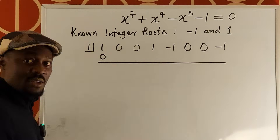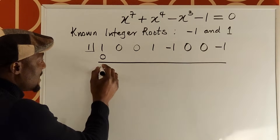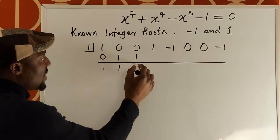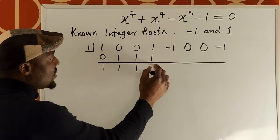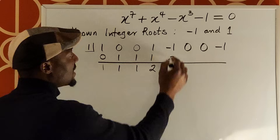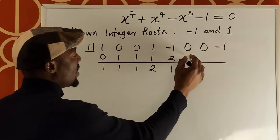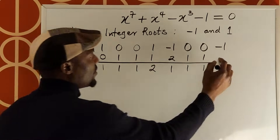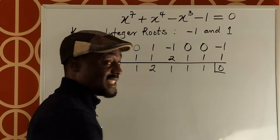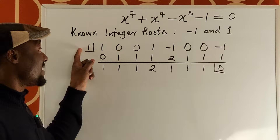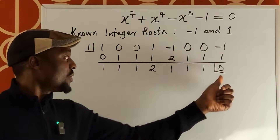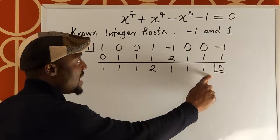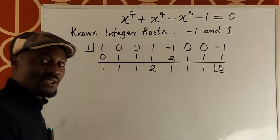We put zero below the first coefficient, add to get one, multiply by one to get one, add to get one, multiply to get one, add to get one, multiply to get one, add to get two, multiply by one to get two, add to get one, multiply to get one, add to get one, multiply to get one, add to get one, multiply to get one, and add to get zero. A remainder of zero means one is a factor and a solution, leaving a sixth-degree polynomial.